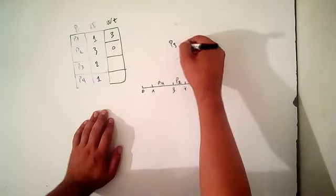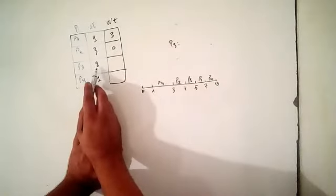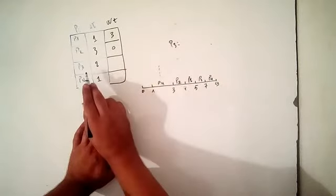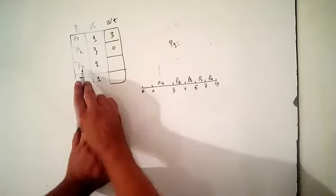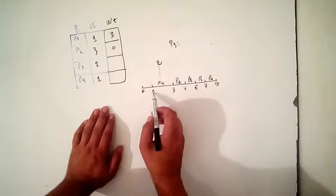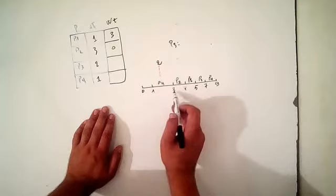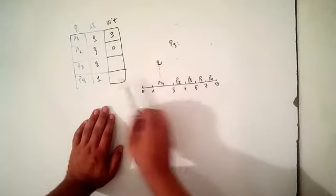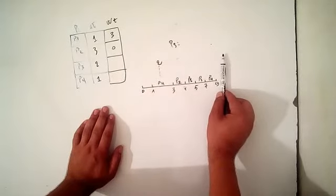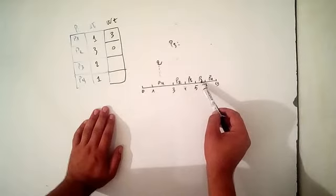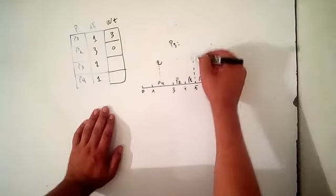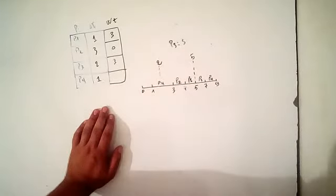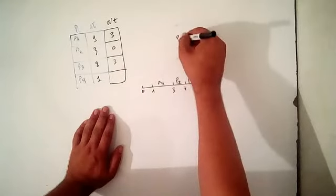For P3, the arrival time is 2. P3 arrives and waits while another process uses the processor from time 1 to 3. Starting from the right-hand side, the last time P3 uses the processor is at time unit 5. So the waiting time of P3 is 5 minus 2, which equals 3.